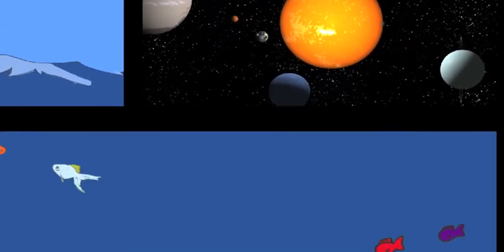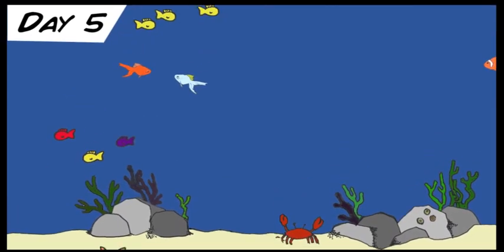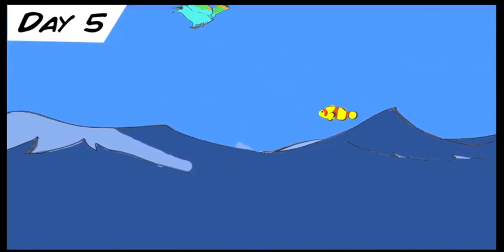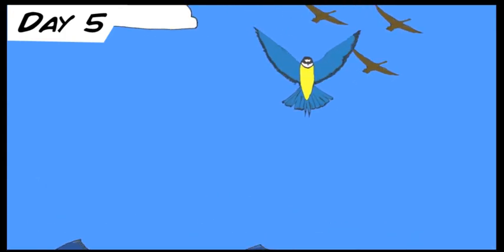Then God said, Let the waters swarm with fish and other life. Let the skies be filled with birds of every kind. So God created great sea creatures and every living thing that scurries and swarms in the water, and every sort of bird, each producing offspring of the same kind.